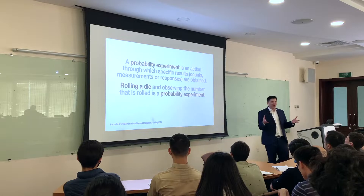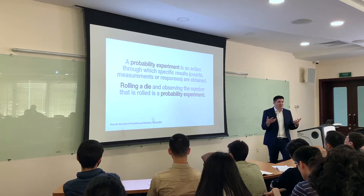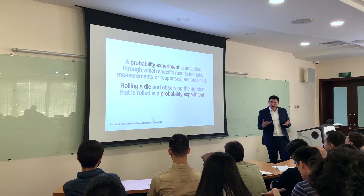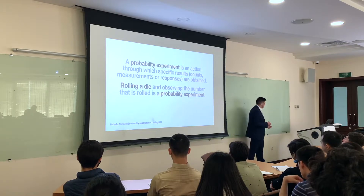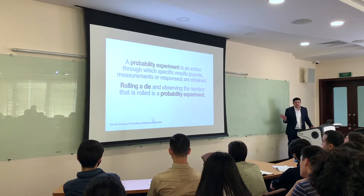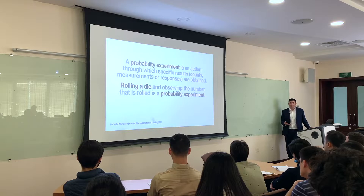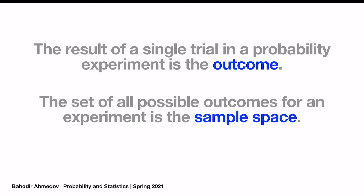Basically, everything — all of these actions which are going to give you a random number, a random outcome — is called a probability experiment. So what we want in this theory is to evaluate the probability, or likelihood, or the chances that this experiment will happen. The result of a single trial in a probability experiment is called an outcome.